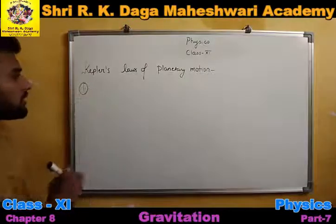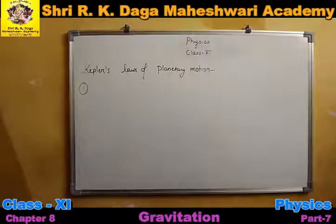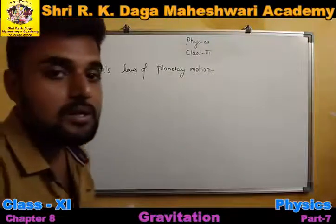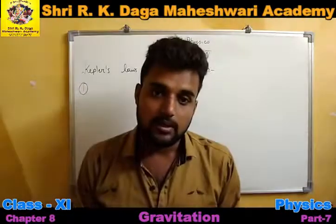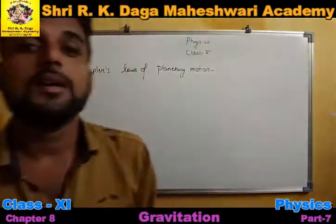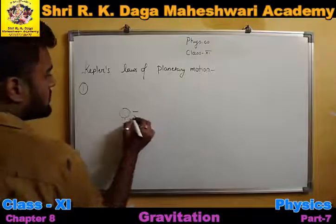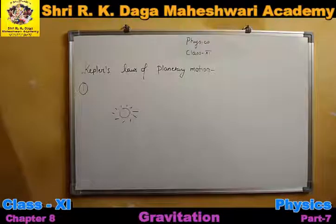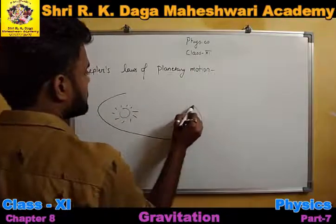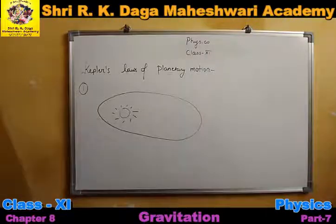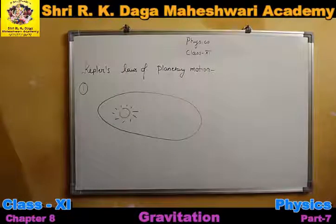Kepler's first law — we had assumed that the Sun's orbit and Earth's path are circular. But Kepler told us that the orbit of a planet around the Sun is not a perfect circle but is slightly elliptical in shape. So the first law describes the shape of the orbit as elliptical.